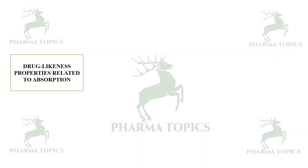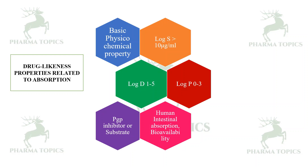Drug likeness properties can also be connected to ADME — absorption, distribution, metabolism, and elimination. For absorption, the features considered include logS (approximately greater than 10 µg/mL), logD between 1 and 5, logP between 0 and 3, and P-glycoprotein inhibitor or substrate status. Human intestinal absorption and bioavailability may also be assessed by computational methods.